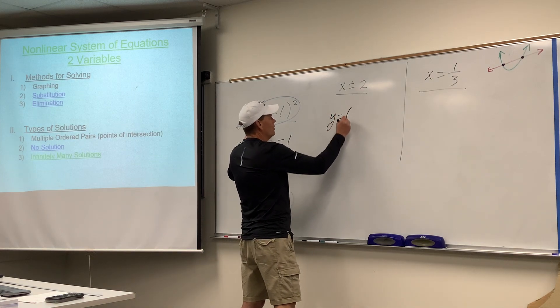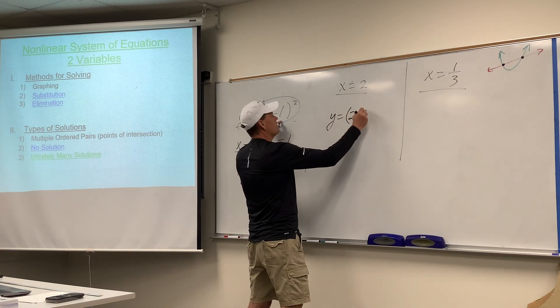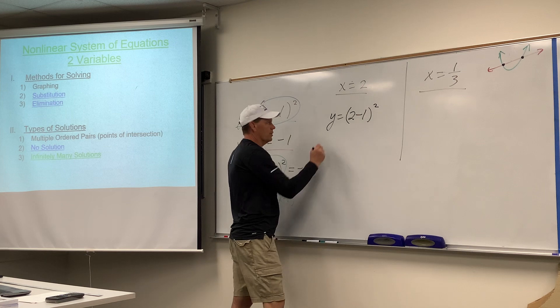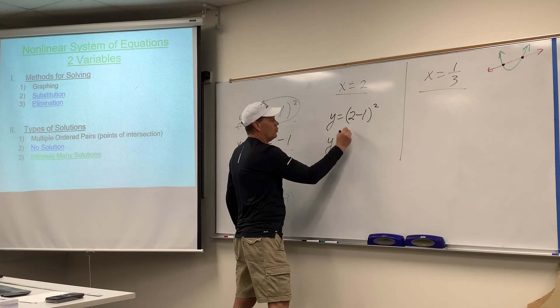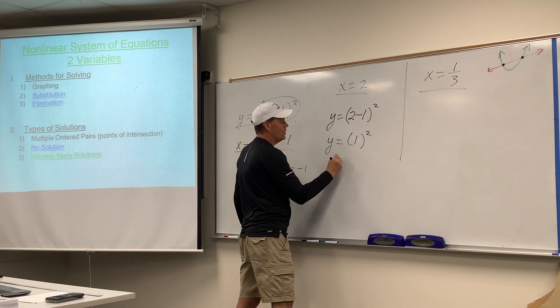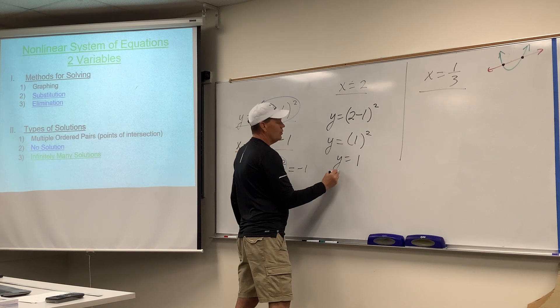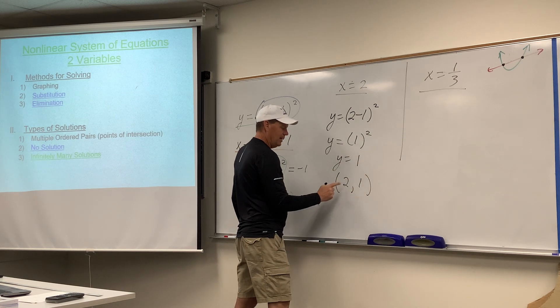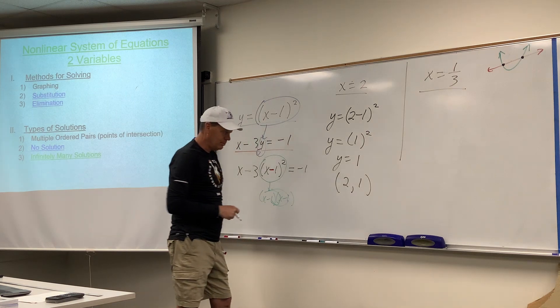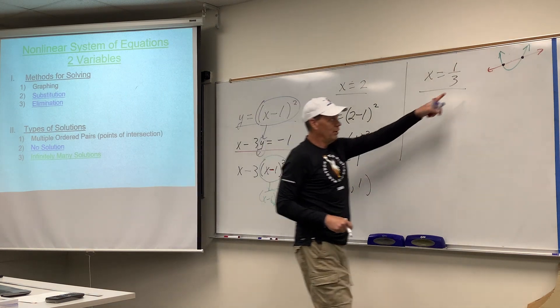So, y equals, plug 2 in for x, and crunch the numbers. 2 minus 1 is 1, 1 squared is 1. So, the ordered pair (2, 1) would emerge from that, and that would be one of the points of intersection.